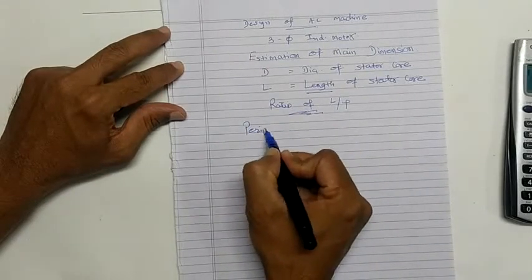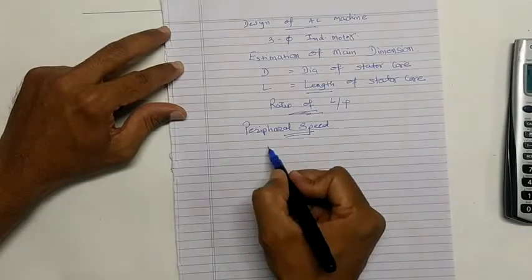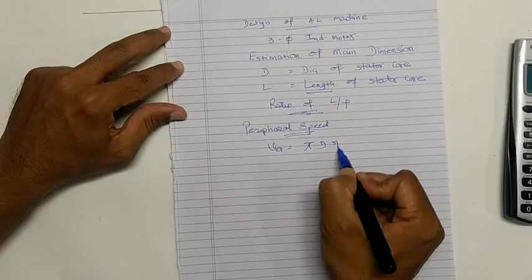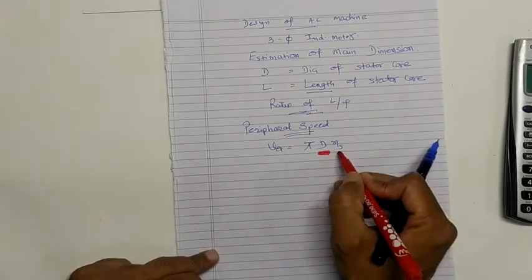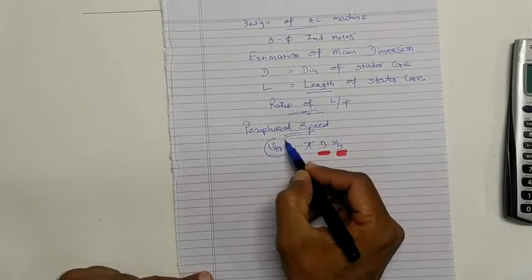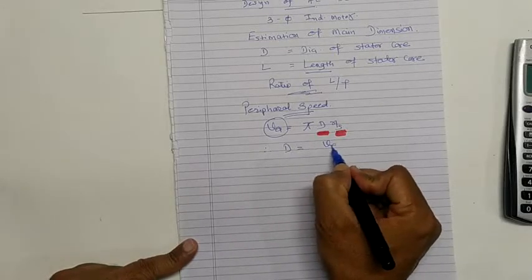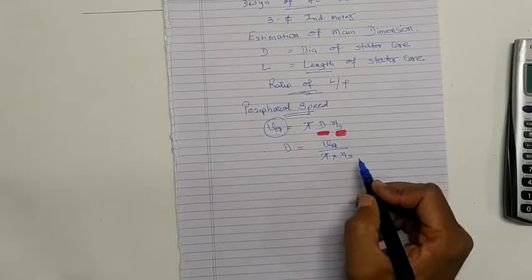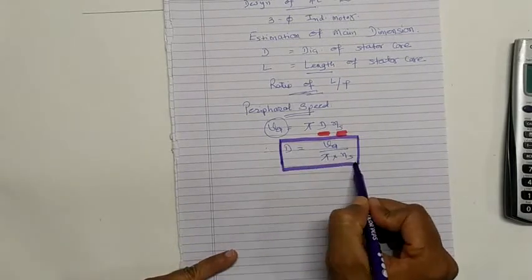For example, we will discuss about peripheral speed. If peripheral speed is given, we know the equation: peripheral velocity equals pi times D times Ns, where D is diameter and Ns is speed in revolutions per second. From this equation, if peripheral speed is available, we can easily calculate diameter D as peripheral speed divided by pi divided by speed in revolutions per second.